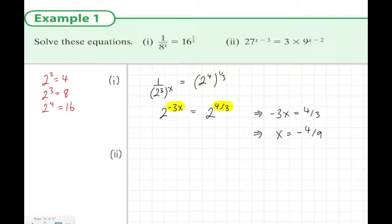In example 1 part 2, the idea is the same. We could write these using the base number 3. In other words, 3 squared is 9, 3 to the power of 3 is 27. So instead of 27, we would write 3 to the power of 3, and that's all to the power of x minus 3.